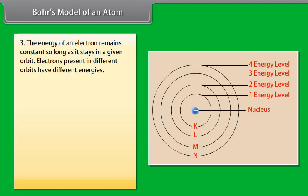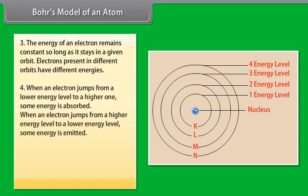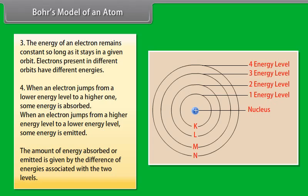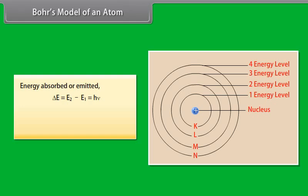The energy of an electron remains constant so long as it stays in a given orbit. Electrons present in different orbits have different energies. When an electron jumps from a lower energy level to a higher one, some energy is absorbed. When an electron jumps from a higher energy level to a lower energy level, some energy is emitted. The amount of energy absorbed or emitted is given by the difference of energies associated with the two levels. Energy absorbed or emitted, delta E is equal to E2 minus E1, which equals H nu, where H is Planck's constant, and nu is the frequency of radiation absorbed or emitted.